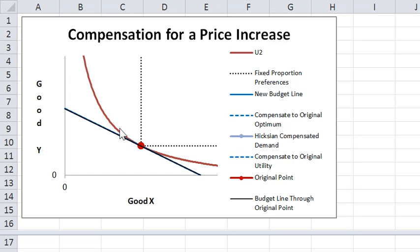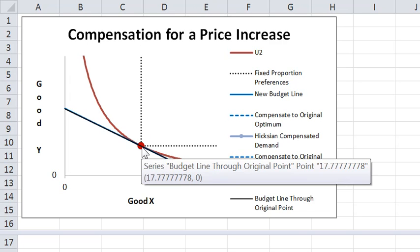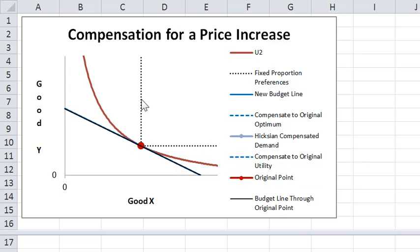In this setup we have the same type of indifference curves we had before, these ones that show substitutability. I now have a new thing, this right angled indifference curve that's for fixed proportions. A consumer who has fixed proportion indifference curves really is insensitive to the relative price. We'll consume at this point irrespective of what the relative price is.